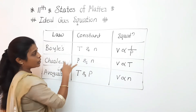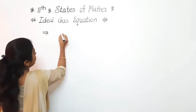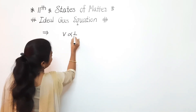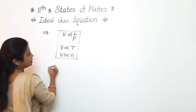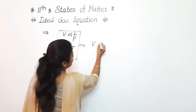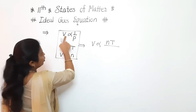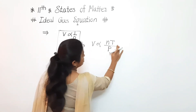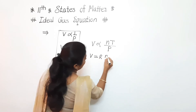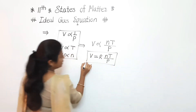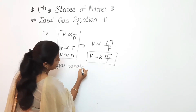Now we combine all three laws. V is common. V is inversely proportional to P, directly proportional to T, and directly proportional to N. Combining: V is directly proportional to NT divided by P. To remove the proportionality sign, we introduce a constant R, giving V = RNT/P, or equivalently PV = NRT. Here, R is the gas constant.